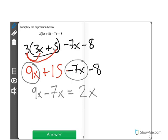we get a total of 2x. And 15 minus 8 will give us a total of 7, positive 7.